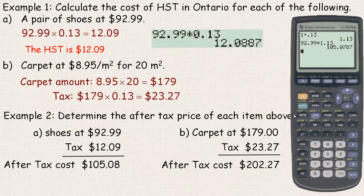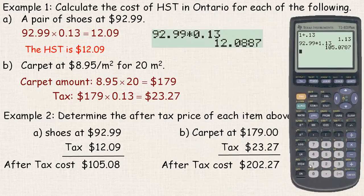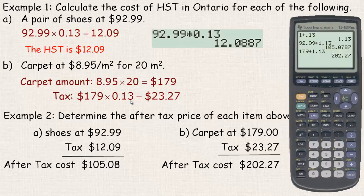For the carpet, the $179 — if we want to add 13% on, we multiply by 1.13 — and there's $202.27 right there. So that's a shortcut: if you just want the final after-tax price, multiply by 1.13. If you need to know the tax amount as well, then you need to do both steps — calculate the tax first, then add it on afterwards.